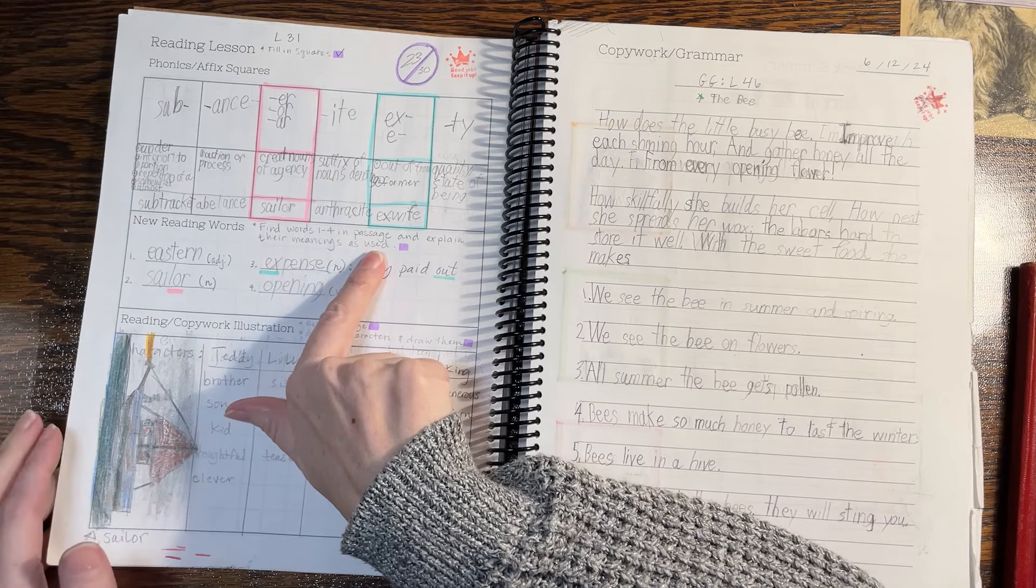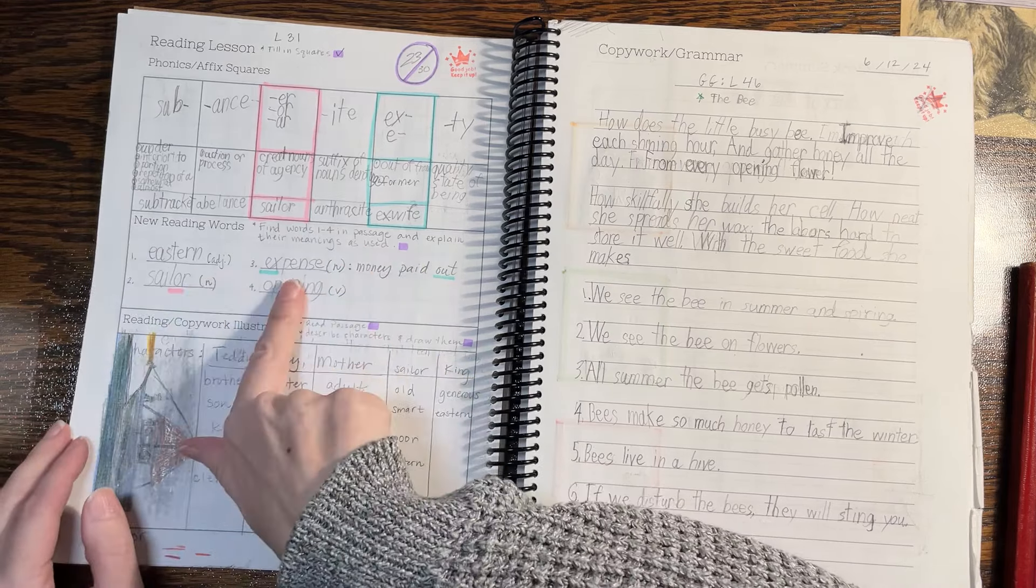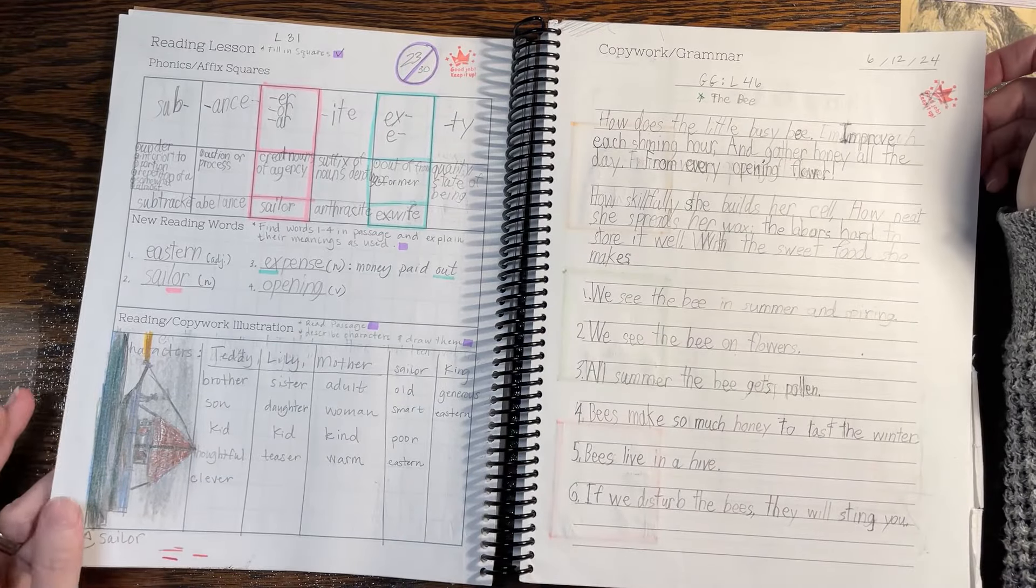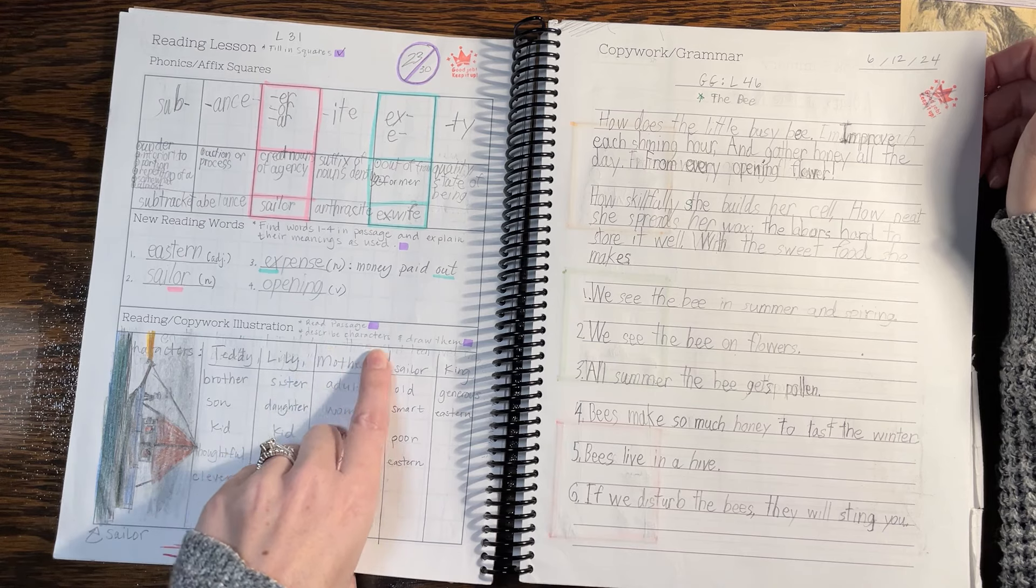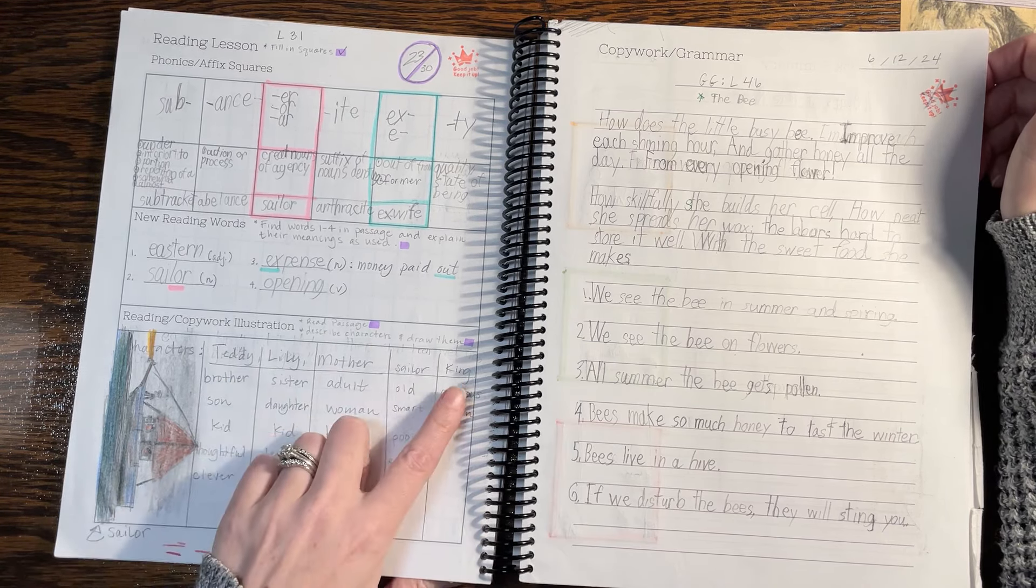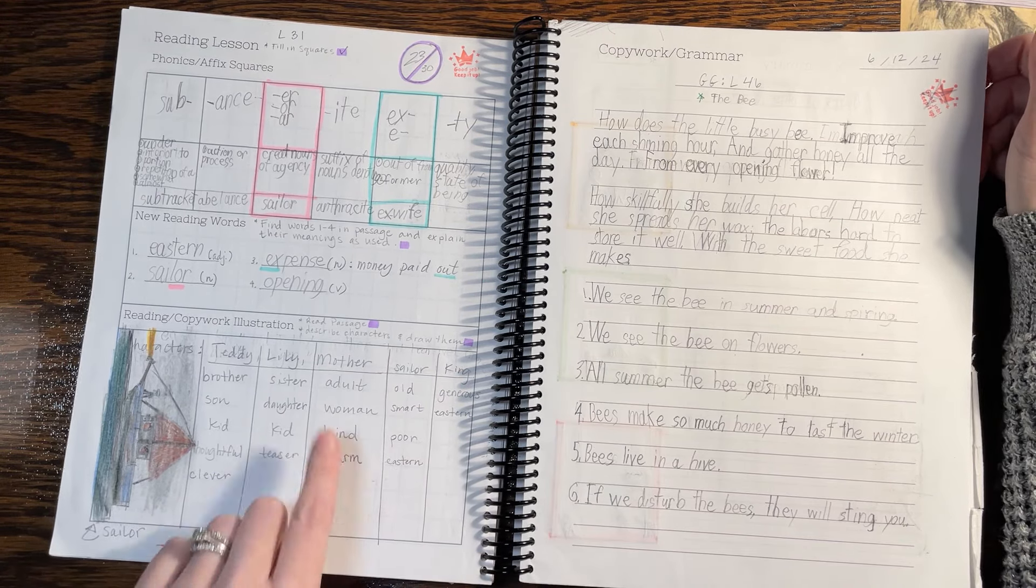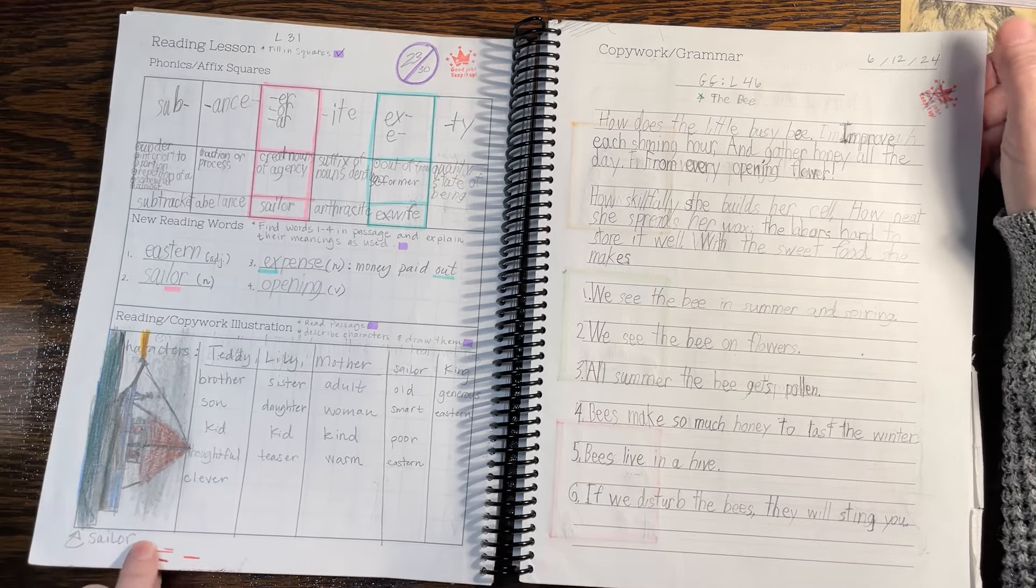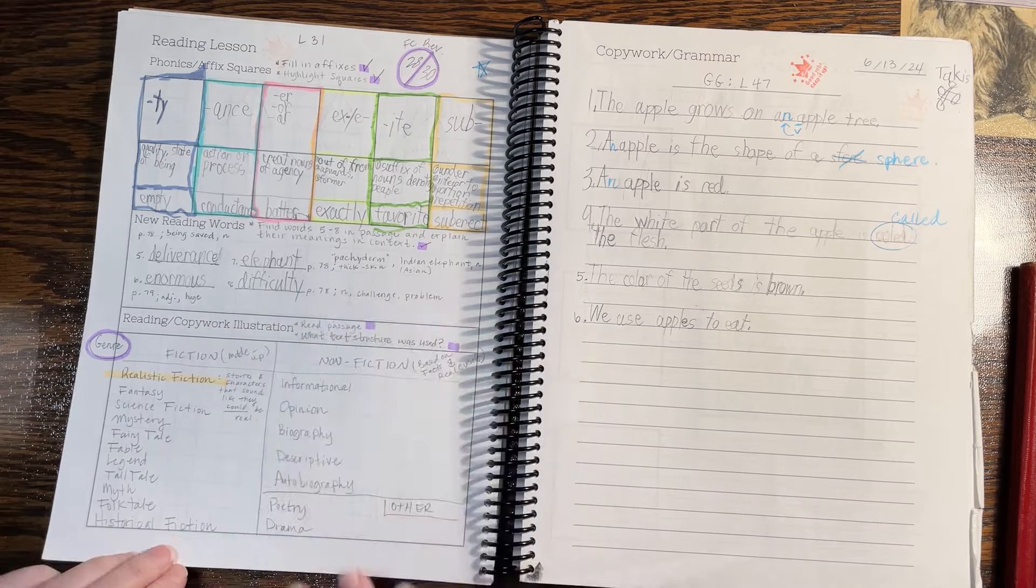But if there were also just some that he missed on his right pile, wrong pile, we could add those into just choose six to focus on for the week. So then he'd be filling those in. Then the new words, write the new words, highlight the affixes, discuss the meanings, read the passage, moral of the story. We talk about that, write a reading word sentence and draw a picture.